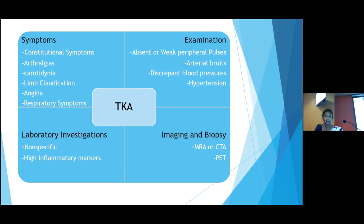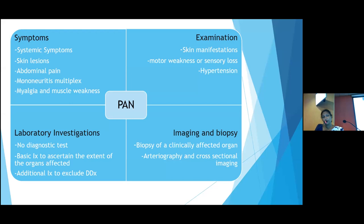In polyarteritis nodosa, symptoms include systemic symptoms, skin lesions, abdominal pain, mononeuritis multiplex, myalgia, and muscle weakness. Examination reveals skin manifestations, motor weakness or sensory losses, along with hypertension. There is no single diagnostic test; investigations are directed at the extent of other organ system involvement to exclude differential diagnoses. Clinically affected organs can be biopsied, and arterial cross-sectional imaging is helpful.